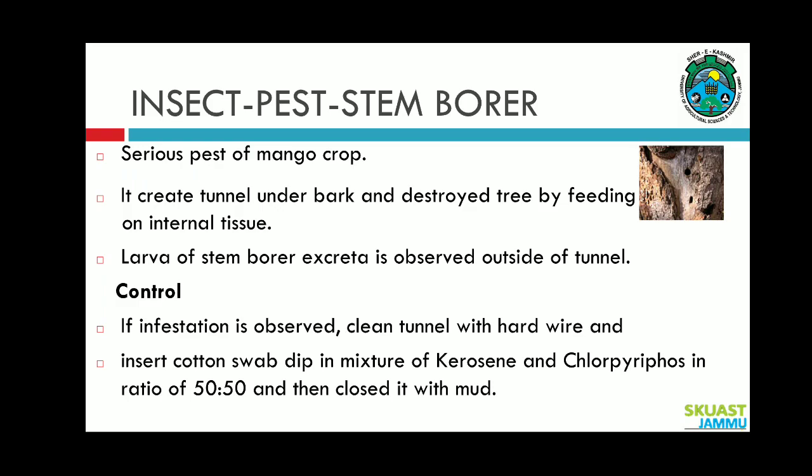Stem borer is also a serious pest of mango crop. It creates tunnels under the bark and destroys trees by feeding on internal tissue. The larval extract of the stem borer is observed outside the tunnel. To control stem borer, if infestation is observed, clean the tunnel with a hard wire, insert a cotton swab dipped in a mixture of kerosene and chlorpyrifos in the ratio of 50:50, and then close the dug portion with mud.